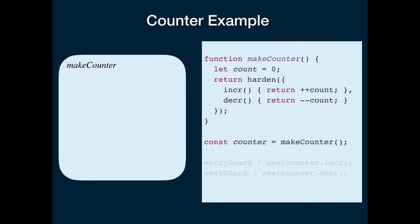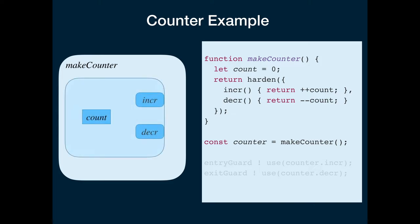Throughout the talk I'm only going to be making use of two main abstraction mechanisms in JavaScript: the function and the record. We have a function called make counter on the outside, and every time it's called it creates a new record with an Inker and Decker method and a new count variable, which is effectively the instance variable of this object. The Inker and Decker are shown on the surface because they're visible outside the object, while the count variable is encapsulated — only the Inker and Decker method can get to it.